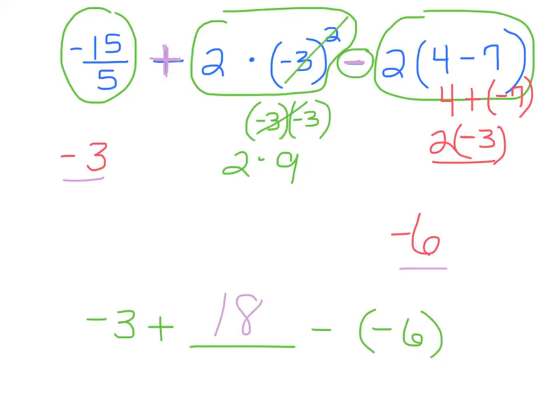Now I'm almost done. I see I have adding and subtracting. Now I like adding, so I'm going to change this subtraction sign here to an add. The opposite of negative 6 is positive 6. So now it's adding, so it really doesn't matter the order I go. I can do any order. I'm going to put my positives together. 18 plus 6, that's 24. Plus I still have my negative 3 out front.